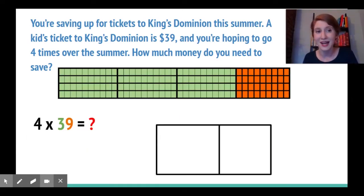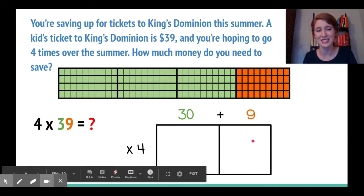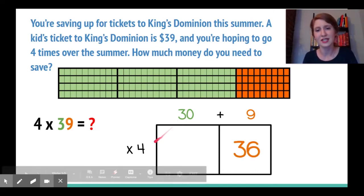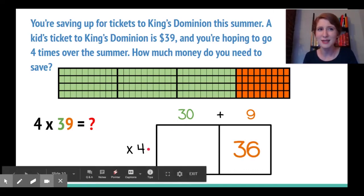I'll start with my box broken in half. 39 is made of 30 plus 9, and you can see that visually. I'm multiplying times 4. 9 times 4 here in the ones place equals 36, and 30 times 4 might seem tricky at first, but let's use our picture.